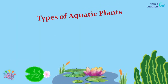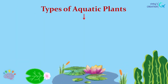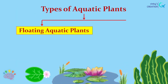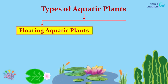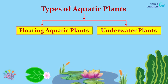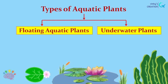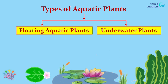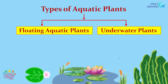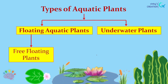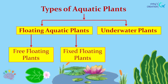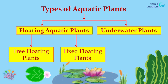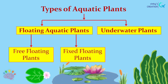Aquatic plants are of two main types: floating aquatic plants and underwater plants. Floating aquatic plants are again divided into two types: free floating plants and fixed floating plants.